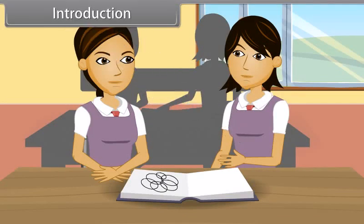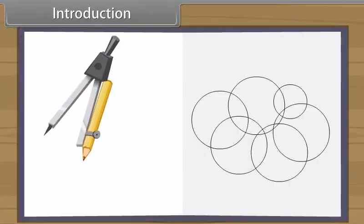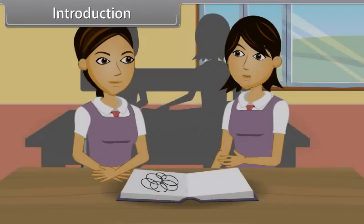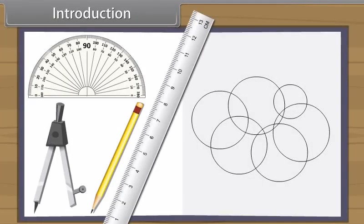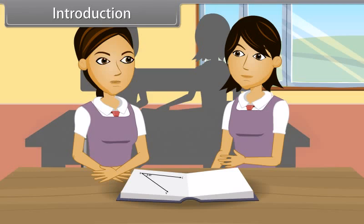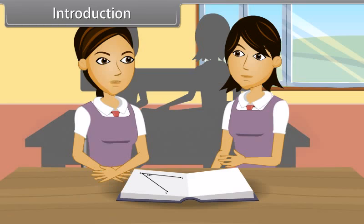Hey Radha, what are you doing? Wow, very beautiful. How do you make this? I made this with the help of compass and pencil. But do we really need a compass to make these circles? Yes, to make an accurate figure, we need all these geometrical tools. Can you see this angle? It's a 30-degree angle. I made this with the help of a compass and a ruler. I also want to learn. Come with me, I will teach you.